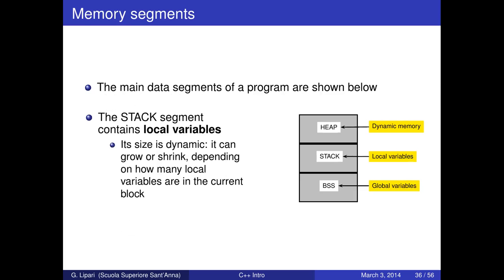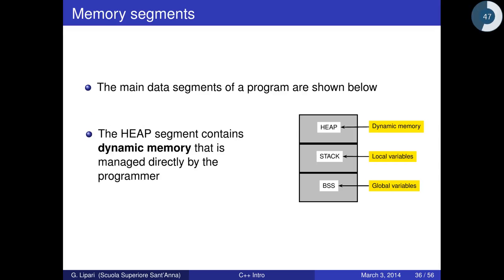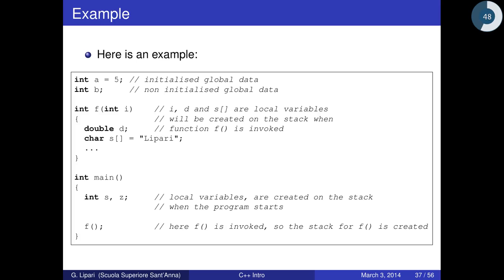Local variables stay in the stack segment. The stack size is dynamic — every time a local variable is created, the segment grows slightly. It can grow or shrink depending on how many local variables are in the current block. The heap contains dynamically allocated memory — in C you use malloc and free; in C++ you use the new and delete operators.